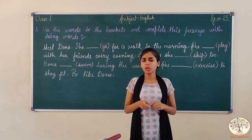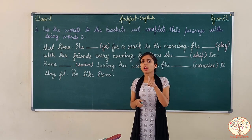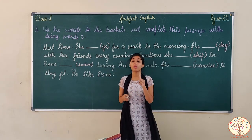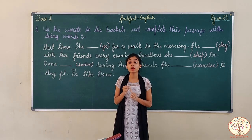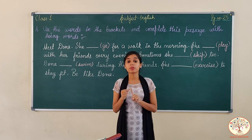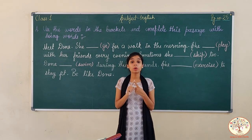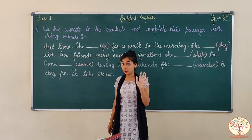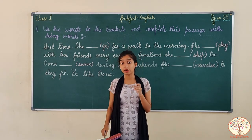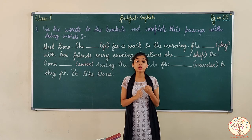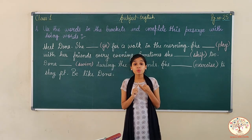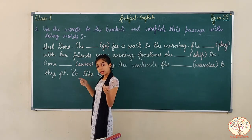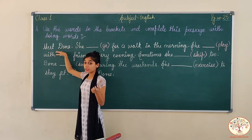Before moving forward, as I have told you all, we use S or ES to make plurals. Whenever we talk about a single person or a single thing, the verb — that is, the doing word — will always be in its plural form. Whenever we talk about a single person or a single thing, the doing word will be in its plural form. Let us read and I will explain it more properly.